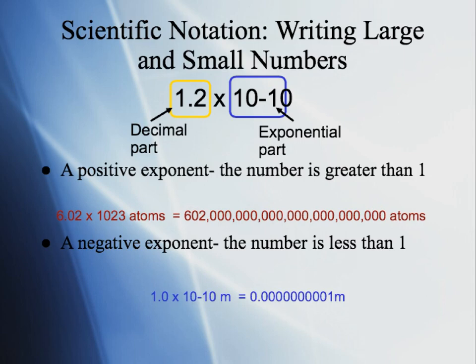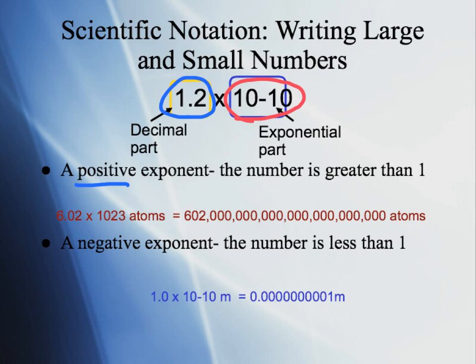Here's another example of a number written in scientific notation. We have a decimal part, 1.2, and then the exponent part, times 10 to the negative 10. When looking at a number in scientific notation, remember: a positive exponent means the number is greater than 1 — it's a big number.